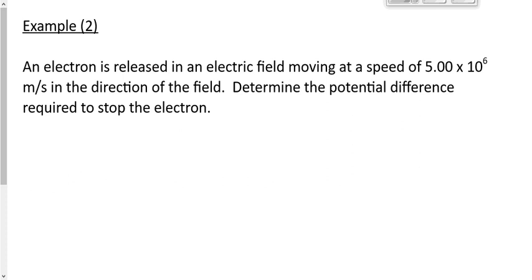This electron is slowing down. We know that for two reasons. One, because the question asks for the potential difference required to stop the electron — it must be slowing down if we're going to stop it. The other way to look at it: the electric field is in a certain direction, the charged particle is moving in the direction of the field. It's a negative particle, so the force is opposite — to the left. If the particle is moving in the direction of the field and the force is in the opposite direction, then it must be slowing down.